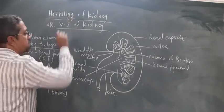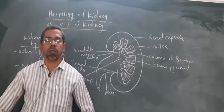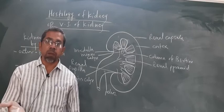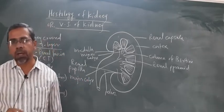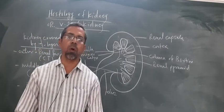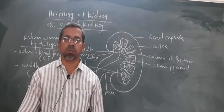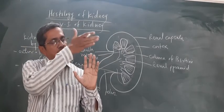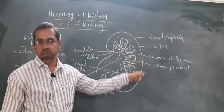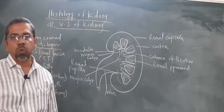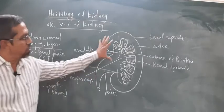Histology का मतलब होता है study of tissue — what components are present in kidney, what type of tissues are present, what are the parts of the kidney. यह tissue level की study को histology कहा जाता है। यहां पर vertical section यानी longitudinal section of the kidney लेने के बाद एक elaborated structure हमारे सामने आता है, उसी को हमें यहां पर देखना है।